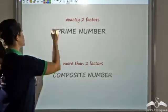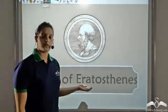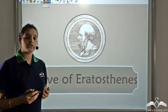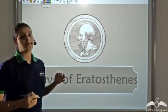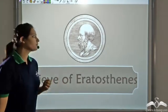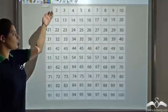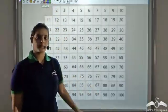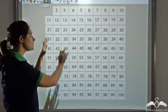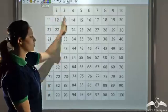This was answered by a Greek mathematician whose name was Eratosthenes. He invented a process by which we could find prime numbers, and that process is called the Sieve of Eratosthenes. Let's try to find prime numbers from 2 to 100 by applying the Sieve of Eratosthenes.